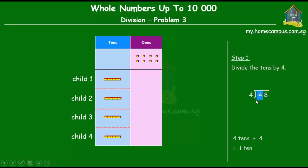Now we can show that in the working here as well. We know that when we want to divide a number by 4, we think of the multiplication table of 4. So 4 times 1 gives us 4. That's quite straightforward and it leaves a remainder of 0. There's nothing left. So that's how we divide the tens by 4.